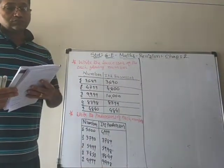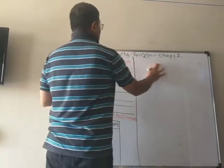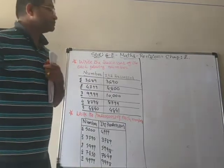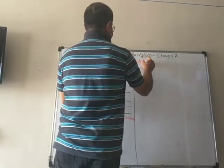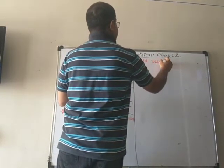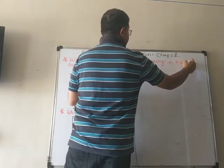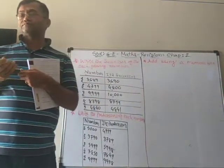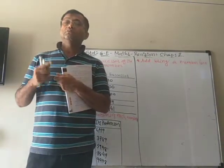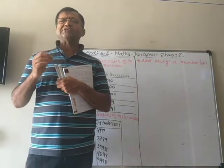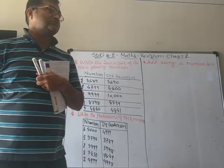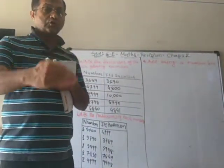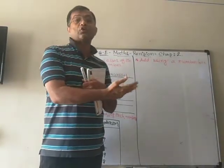Now we will take some examples of addition and subtraction on a number line. When we add whole numbers on a number line, it is very simple: we start with the first number and while adding, we move to the right side, making one jump per step.